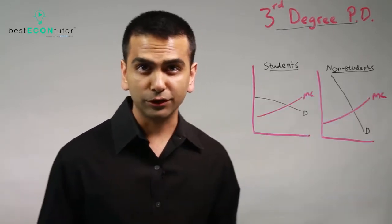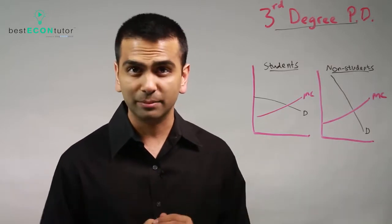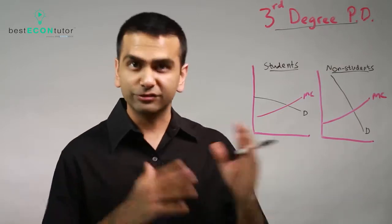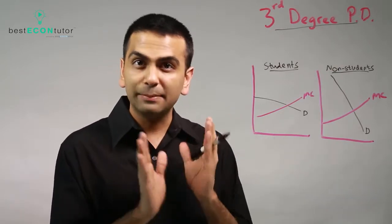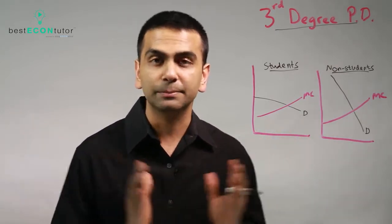Now the other type of discrimination that you learn about is third-degree price discrimination, also known as multi-market discrimination. Now this is where it's not quite as fine-grained as first-degree where you're discriminating by the individual. Here you're discriminating by the group, the type of group of people.